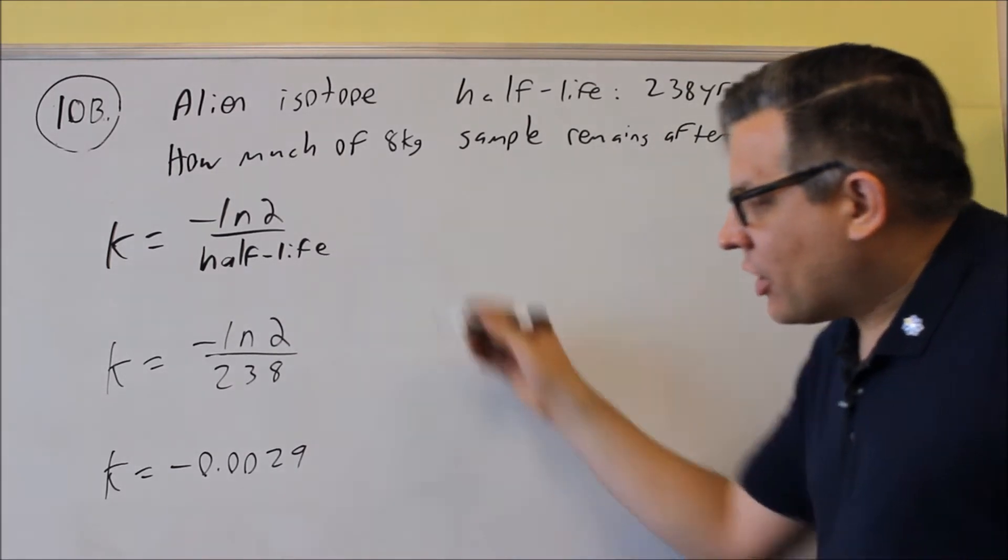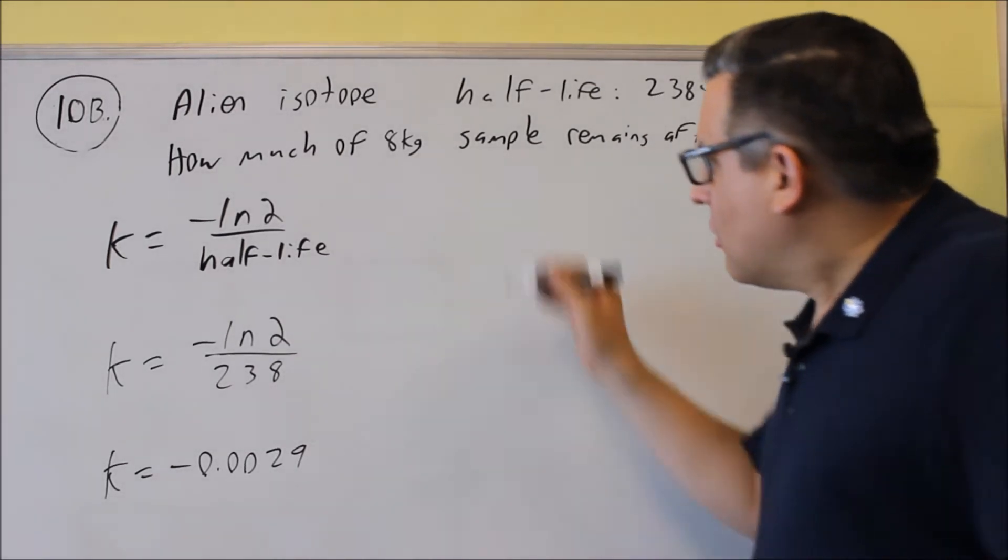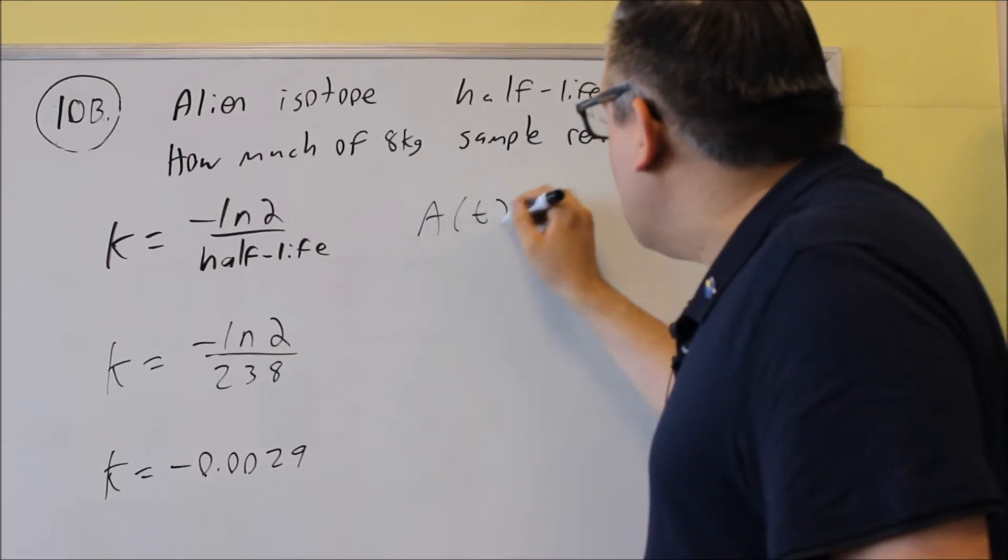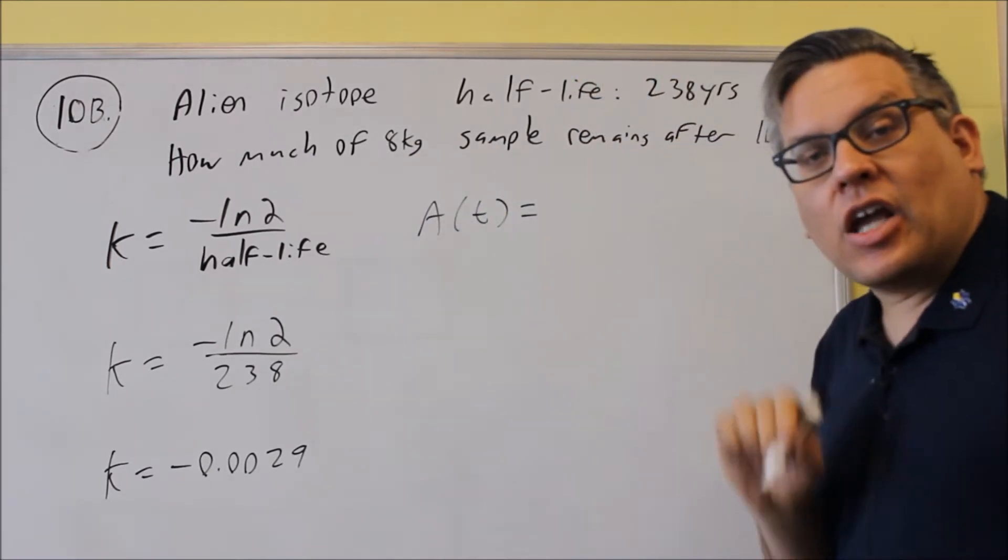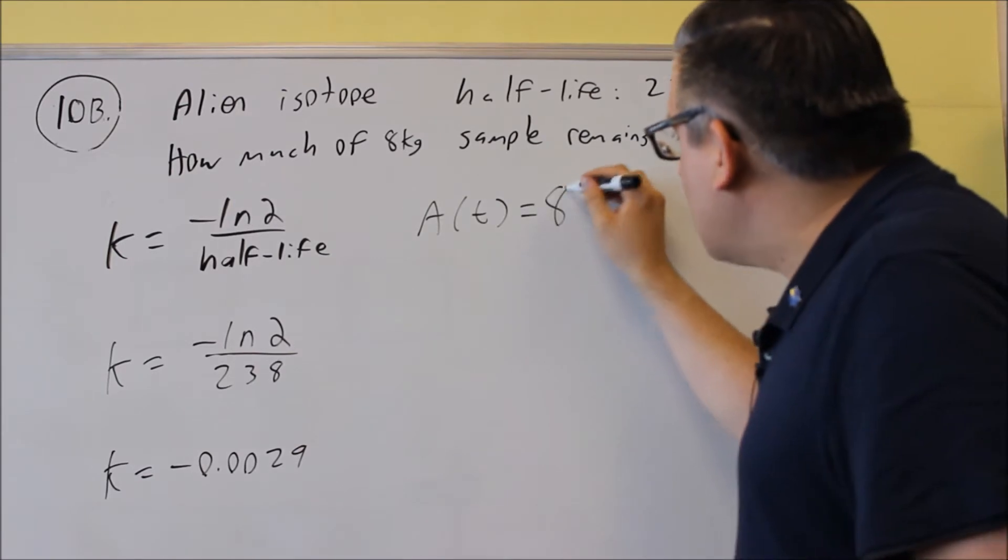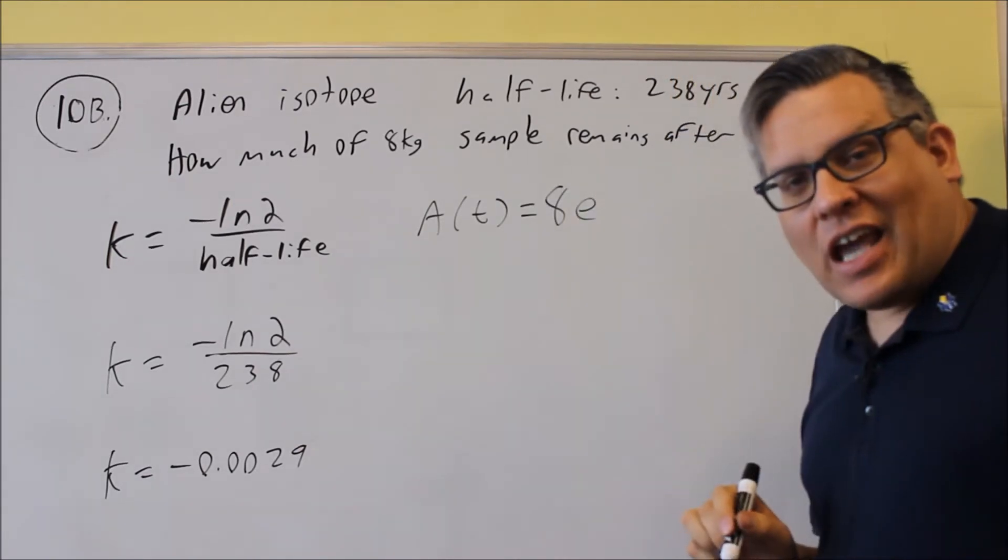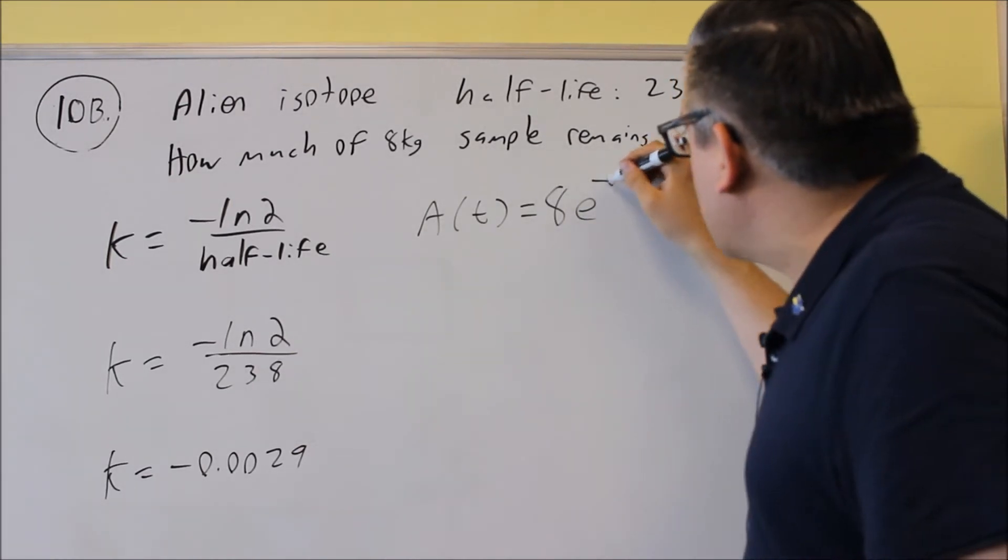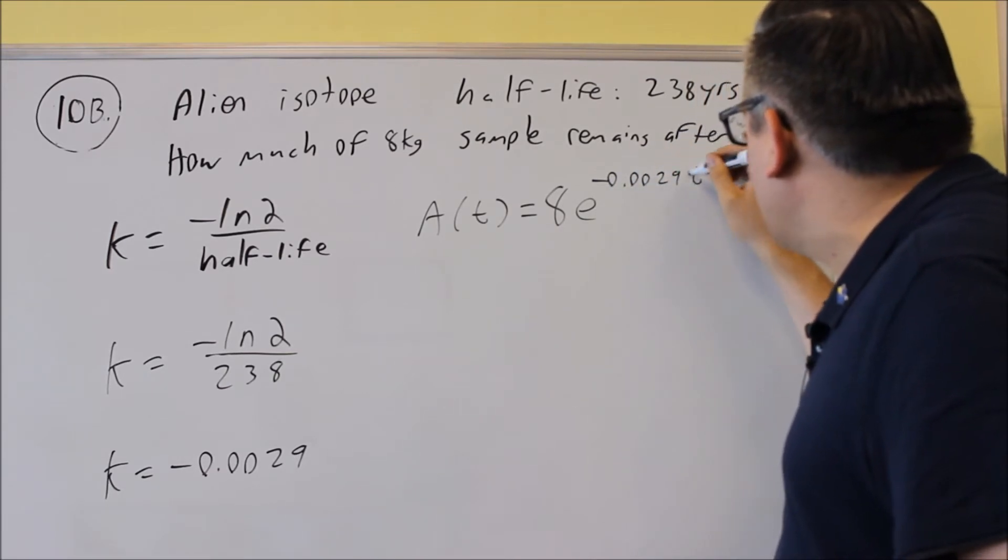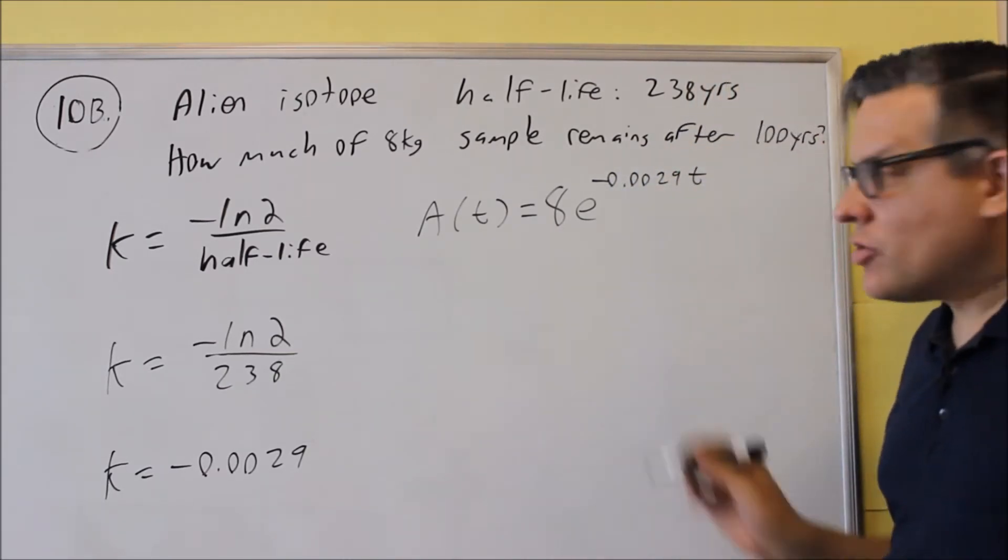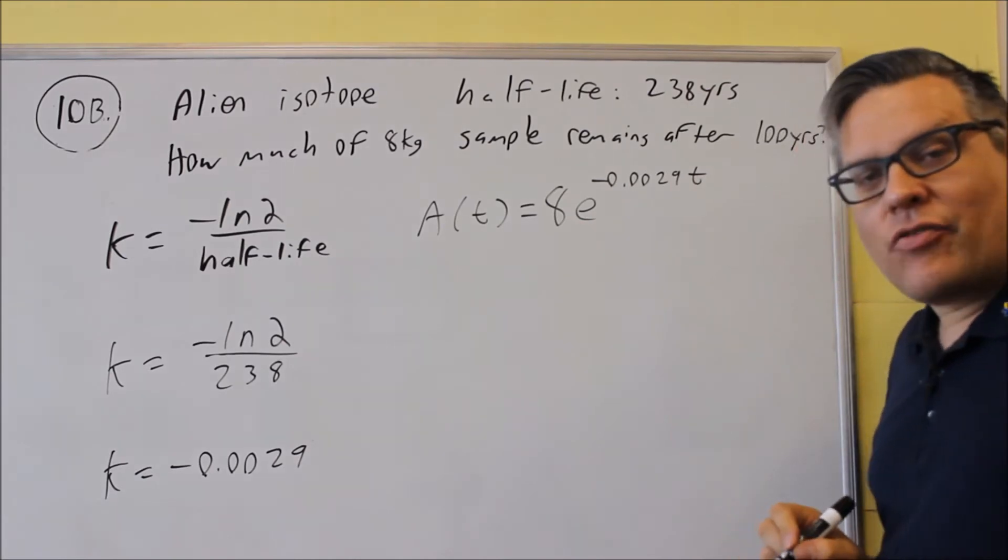We have to come up with the decay function for this. A(t) equals A₀, the initial amount, which is 8. Then we have e to the kt—that's how the formula works. So I'm going to plug in the k value I just found, and then I have my time. This would be your decay function.